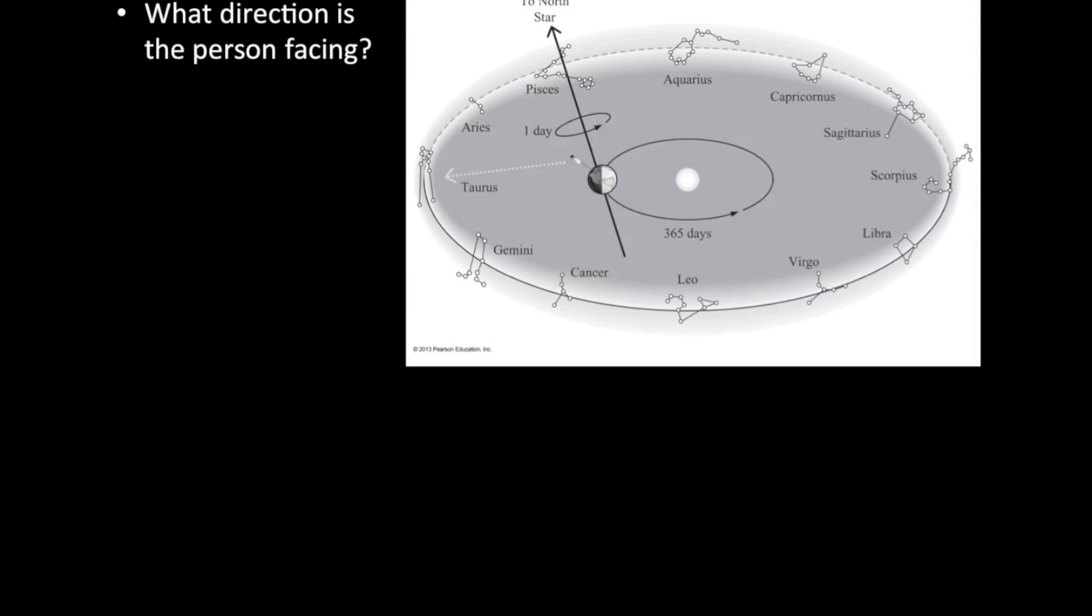First of all, what direction is this person facing? Well, if you look at the diagram, you'll see that the person has their nose and their arms and their whole body facing away from the north pole of the Earth. If you're facing away from the north pole, then the opposite direction of that is south. This person is facing south.